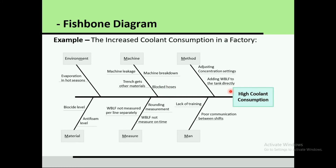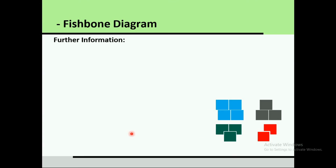Another example is high cooling consumption as the problem. Under environment, a cause may be evaporation in hot seasons. Under machines, it may be machine leakage — if machine leakage is identified as a problem, you can work on that machine. Other causes include machine breakdown and blocked hoses. This illustrates how to work through a fishbone diagram.